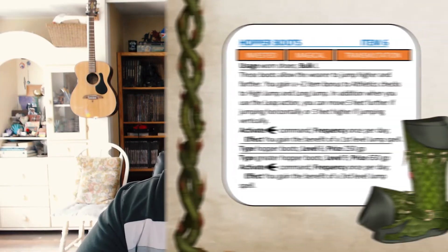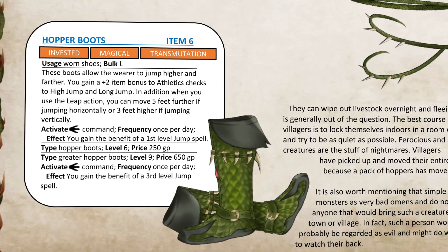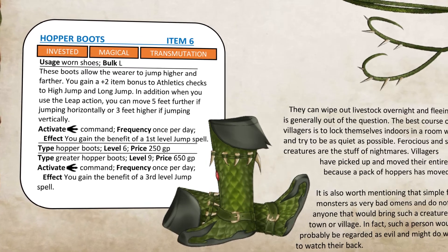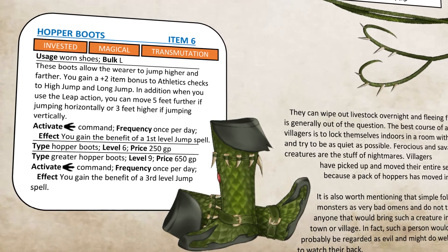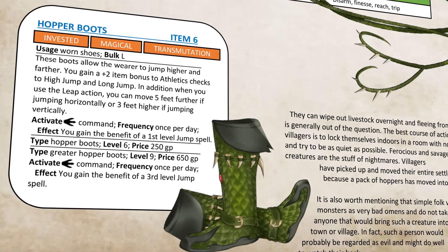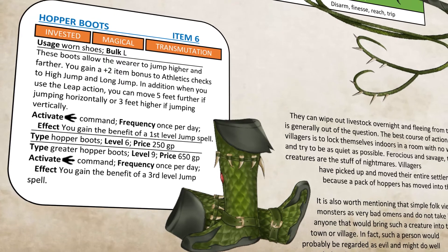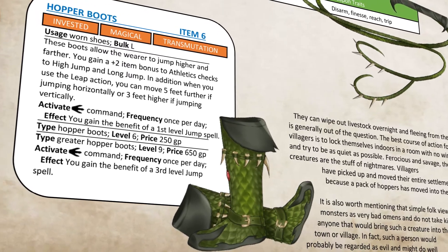With the hopper boots, they give you a plus two bonus to athletics checks for jumping — so for a high jump or long jump you'll get that bonus. They also have a single action that once per day lets you cast a first-level jump spell. The higher-level hopper boots at level nine, that jump spell is heightened to level three, so you can jump for a minute with all of your actions. It's a fun little item that lets you simulate how the creature operates.